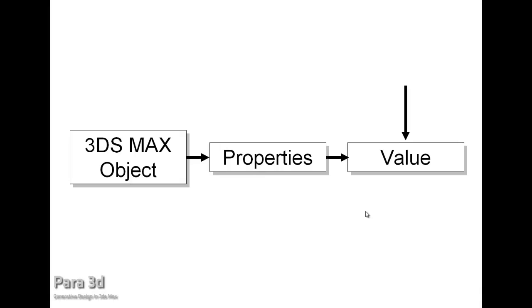In 3ds Max you create things known as objects. These objects have different properties. A property is a kind of value that describes different aspects of an object. And what is controlling the value of the property and lets users change it is a controller. So a controller has a very important role in 3ds Max and is responsible for changing the value of an object property.